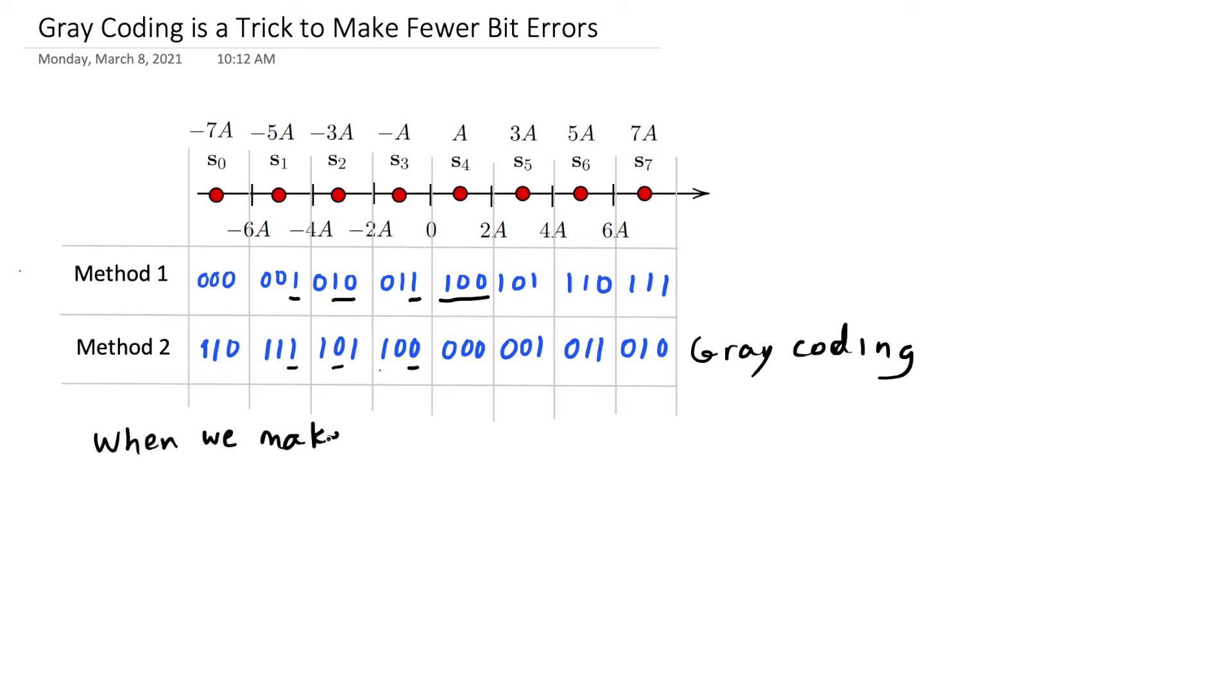So when I make a symbol error, our method of coding the bit strings makes a difference in, on average, how many bits are in error.